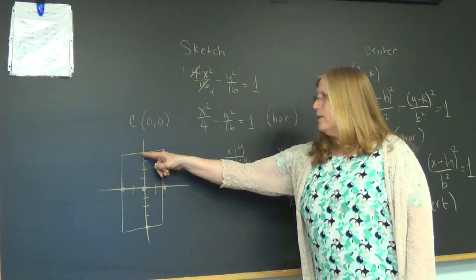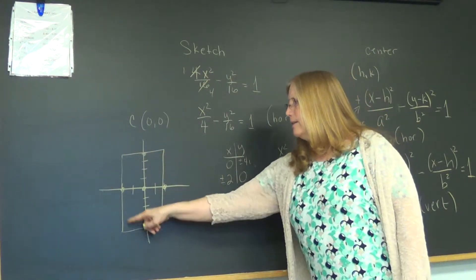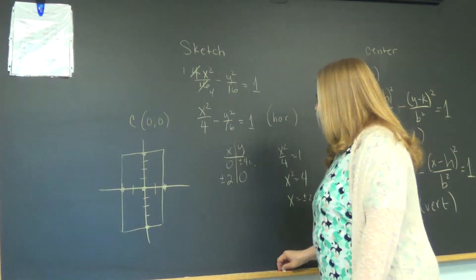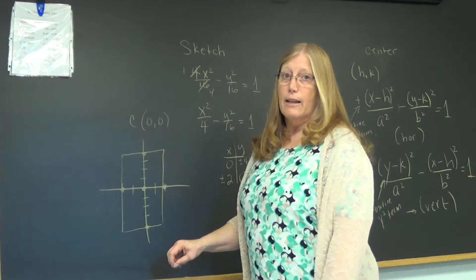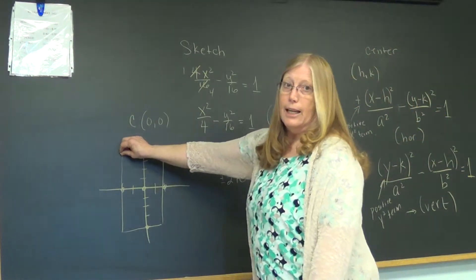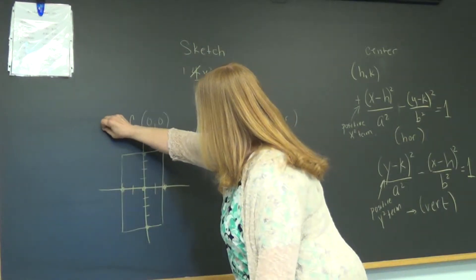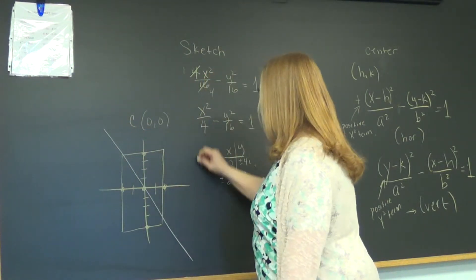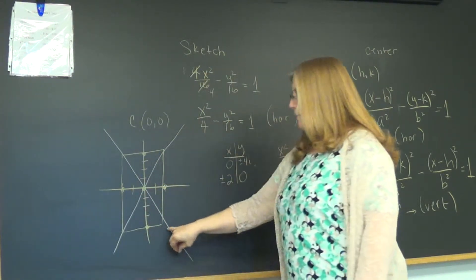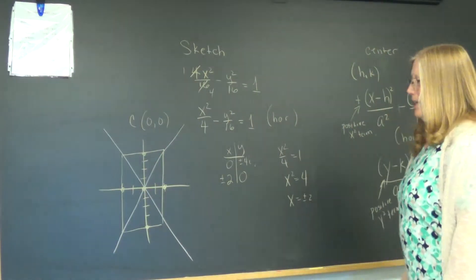Notice these points are on the sides of the box, on the middle of each side. Now I can take the diagonals. They're supposed to go through the center and the corners. Missed a little bit there, so do better than I did.